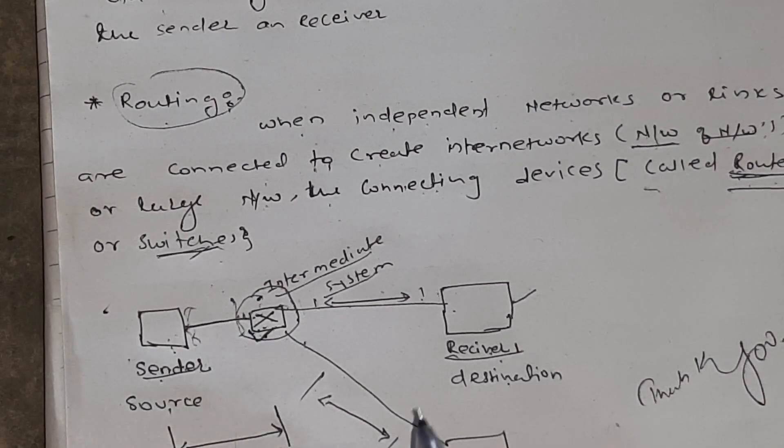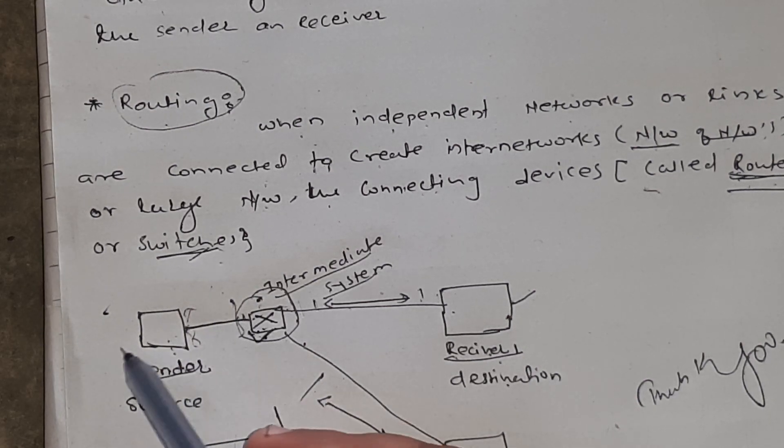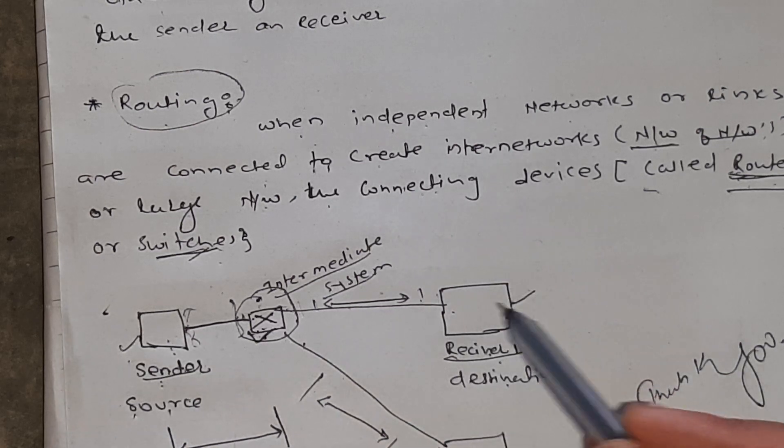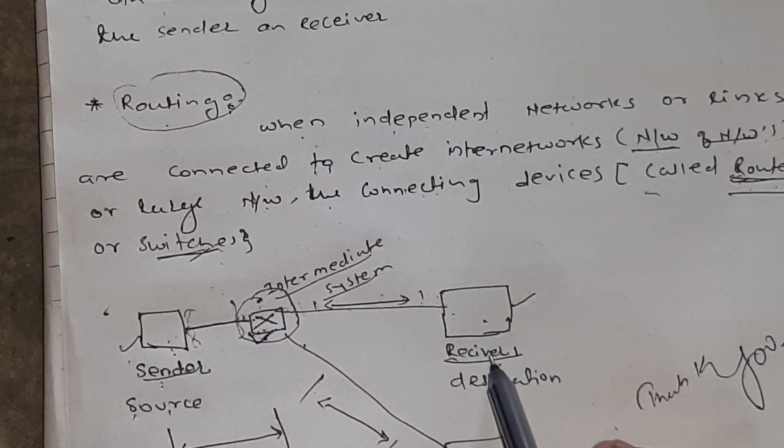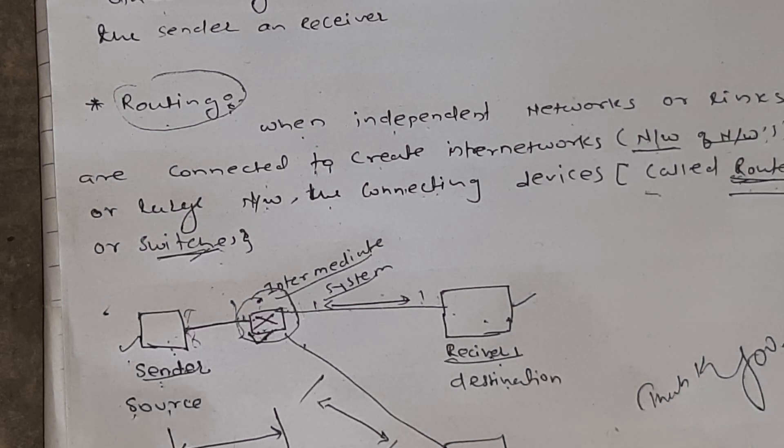In this diagram, I will tell you how the router and switches are connected to the network. Here we have the sender machine, which is the source, and here we have two different machines, which are receiver 1 and receiver 2, which are the destination devices or destination machines.